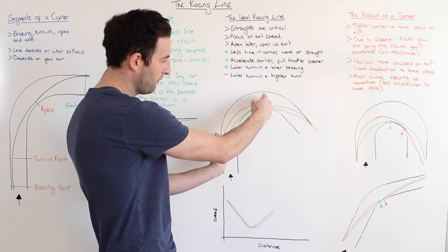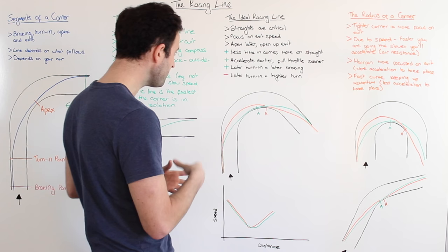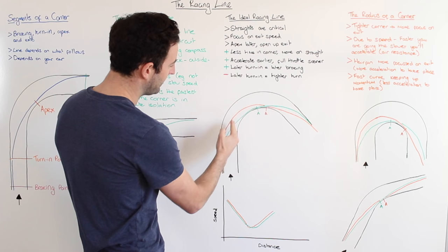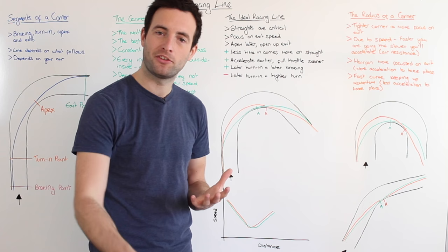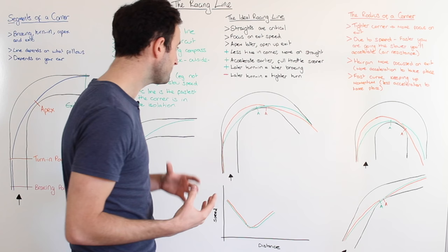Now the positives of the ideal racing line. Firstly, you're spending less time in the corner — this period where you're turning the car is shorter. Obviously the car can go fastest in a straight line, so we really want to minimize the time that we're turning the car. After this we can also see that we can accelerate earlier. Because we're coming in wider on this orange ideal racing line, we apex a little bit later and it means that this section is a lot straighter, which means that we can get to the accelerator sooner and carry that higher speed all the way down the next straight, again improving our lap time.